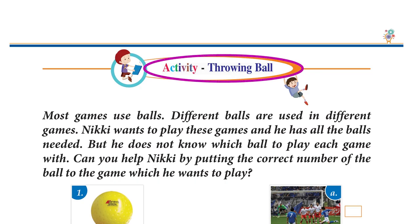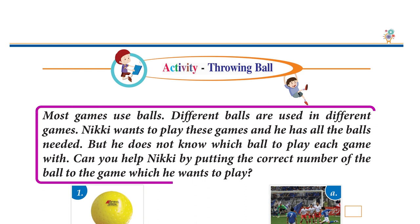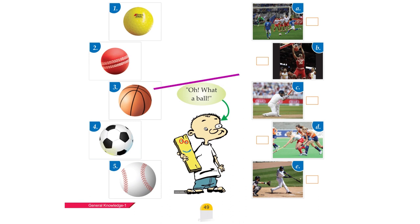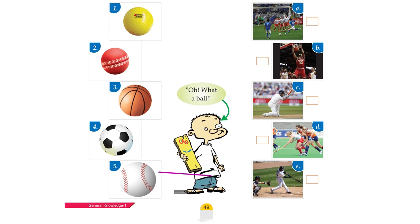Info Bits: Sachin Tendulkar started playing for the Indian cricket team at age 16 and holds the record for most Test (51) and ODI (49) centuries in the world. Activity — Throwing Ball: Most games use balls; different balls are used in different games. Help Nicky match the correct ball to the correct game by putting the correct number.